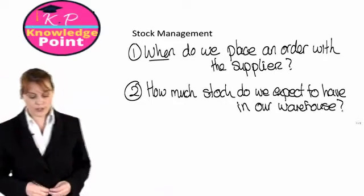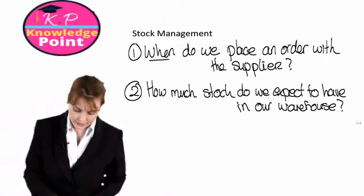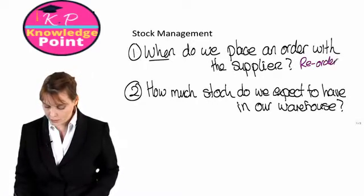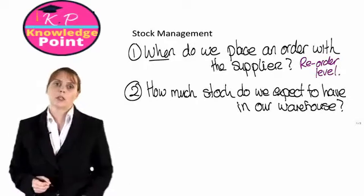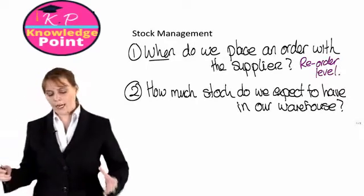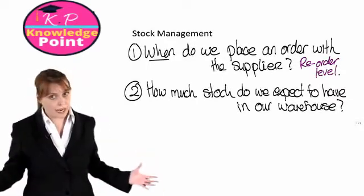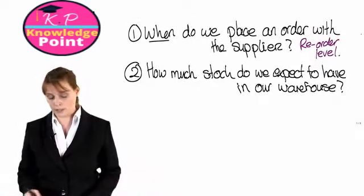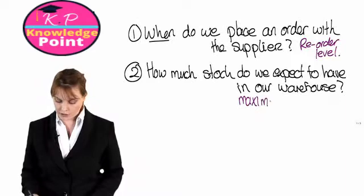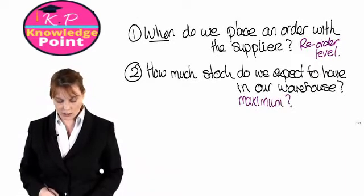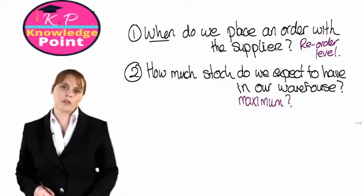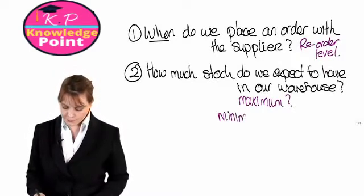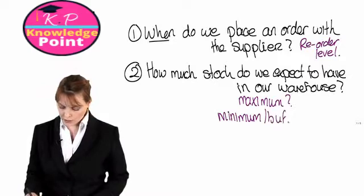When we answer the first question — when do we place an order with our supplier — this will tell us our reorder level. When we look at how much stock we expect to have in our warehouse, we're going to consider two things: the maximum amount of stock we expect to hold, and something called our minimum or buffer stock.